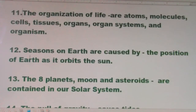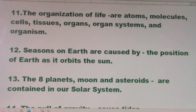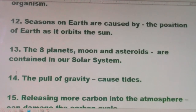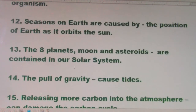Number twelve: seasons on Earth are caused by the position of the Earth as it orbits the Sun. Number thirteen: the eight planets, moons, and asteroids are contained in our solar system.